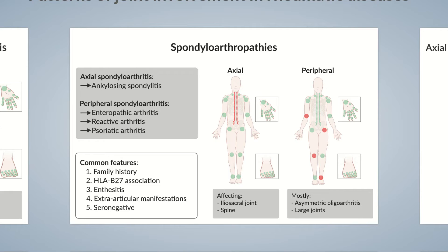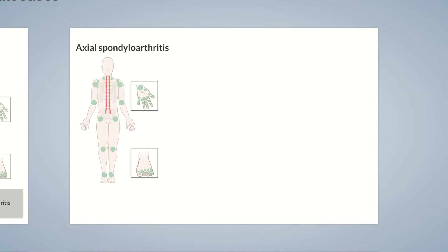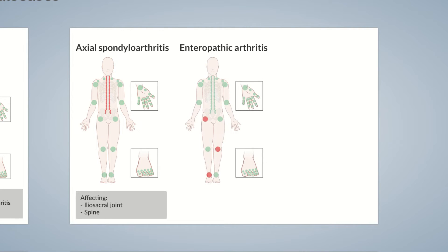There are specific differences between these spondyloarthropathies. Axial spondyloarthritis is characterized by bilateral involvement of the ileosacral joint and the spine. Enteropathic arthritis occurs together with chronic inflammatory diseases such as Crohn's disease, and in contrast to axial spondyloarthritis, manifests with peripheral joint involvement — usually asymmetric oligoarthritis of the large joints of the lower extremities. So if a patient presents with this pattern, there is a chance they have chronic inflammatory bowel disease.